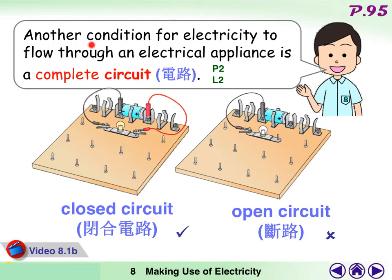Another condition for electricity to flow through an electrical appliance is a complete circuit. Once the circuit is completed and the bulb lights up, we call it closed circuit. On the other hand, the circuit is not completed and the bulb does not light up. We call it open circuit.